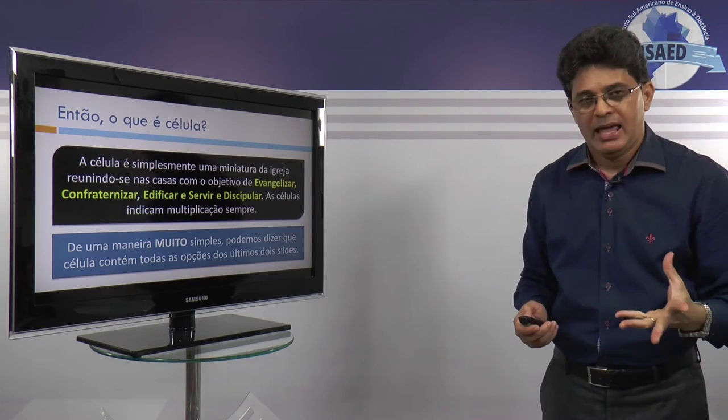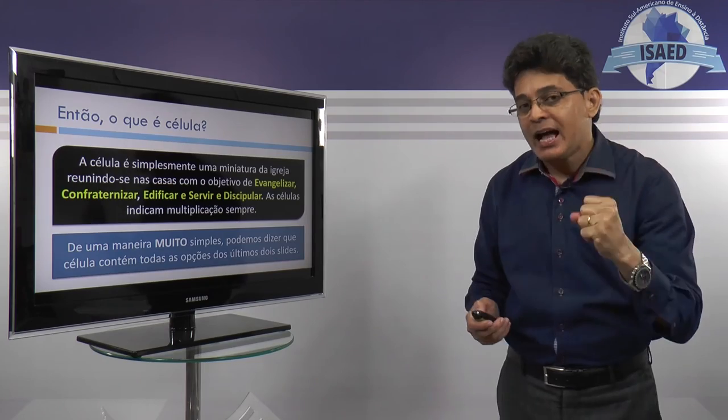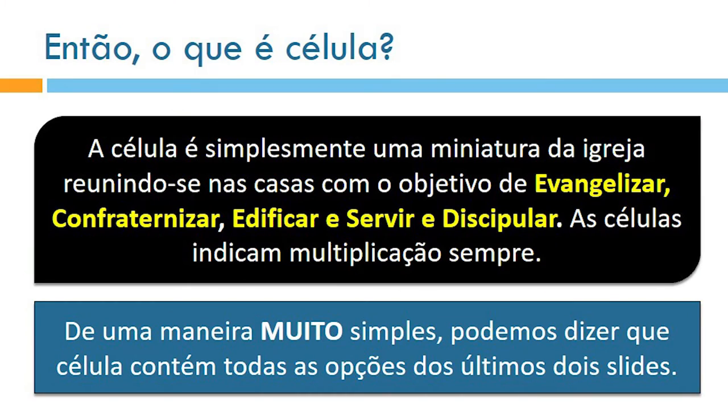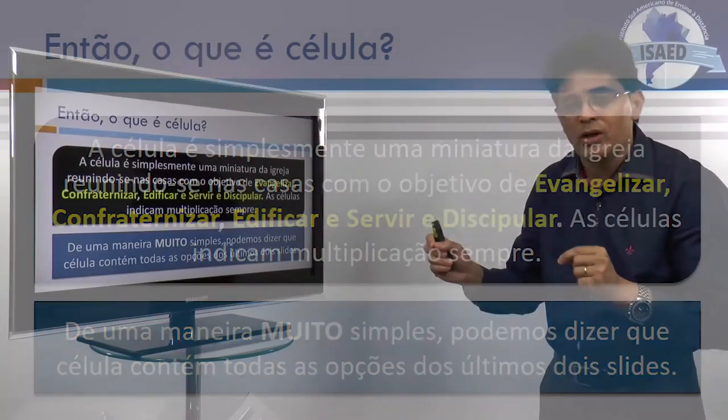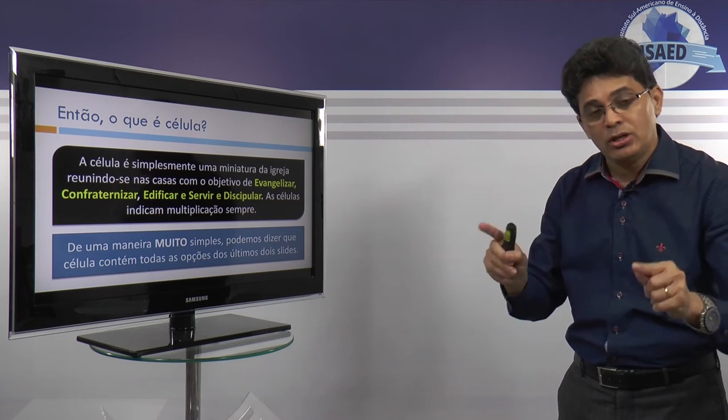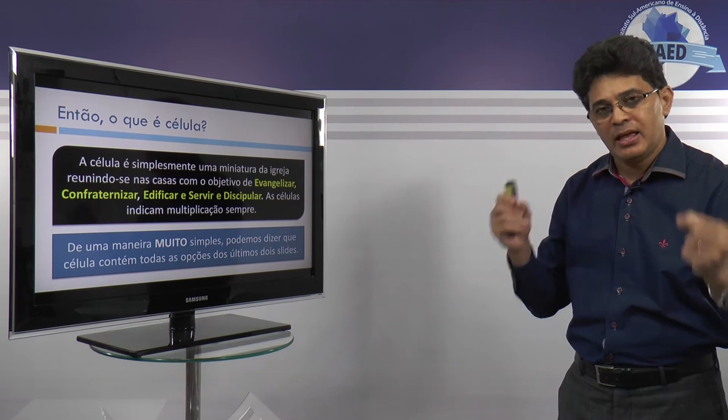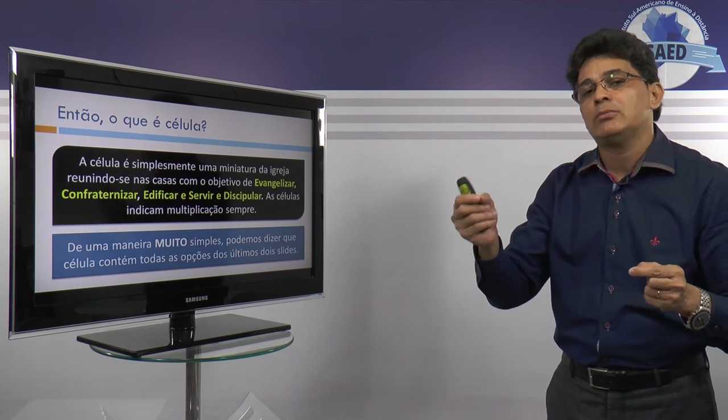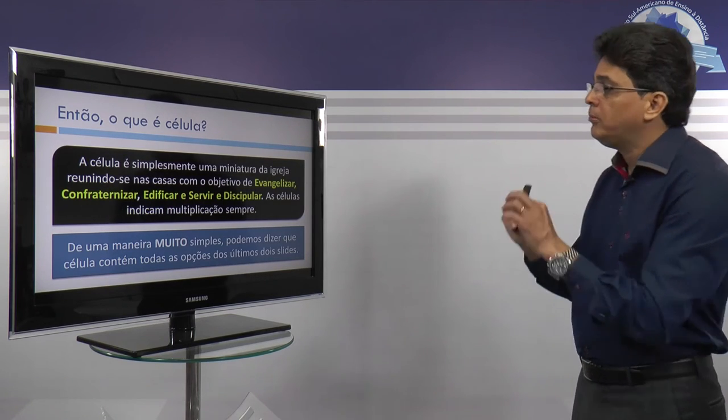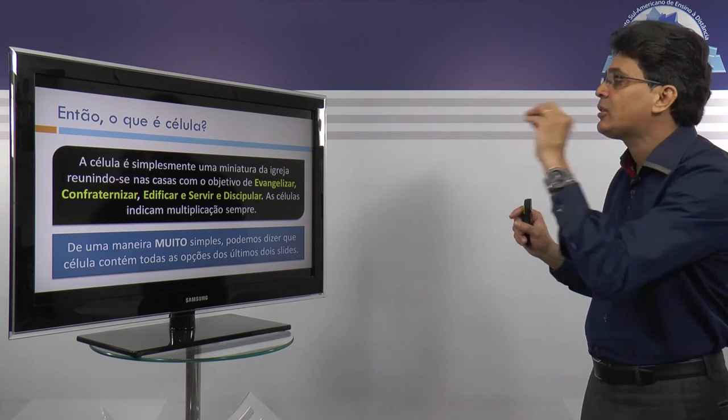Então, o que é célula? Aí vem a resposta pela indagação que fizemos. A célula é simplesmente uma miniatura da igreja. Como eu bem lhes falei, a célula é um pedacinho da igreja que funciona em um determinado lar. Por isso é que ela é uma miniatura. Porque ali nós nos reunimos como irmãos em Cristo para cultuarmos a Deus, aprendermos mais de Deus e isso nós entendemos que ali é um pedacinho da extensão da igreja. A célula como miniatura exatamente da igreja.